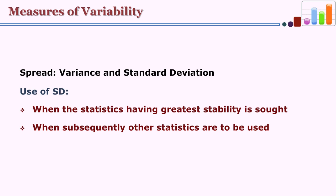The square root can be plus or minus — for example, the square root of 4 is plus 2 or minus 2. So SD can have a positive or negative sign. When you need greater stability you use standard deviation. Among all measures — quartile deviation, range, average deviation, and standard deviation — standard deviation is the most stable and gives the best idea about variability. When subsequently you want to use higher statistics including correlation, you use standard deviation and not average deviation, quartile deviation, or range.